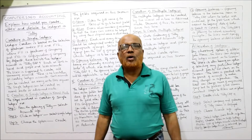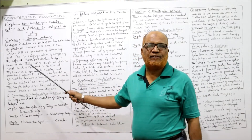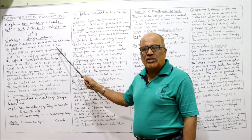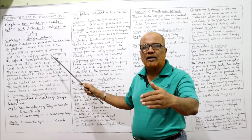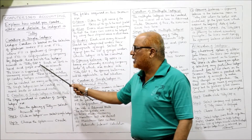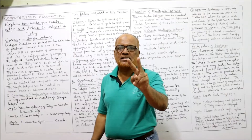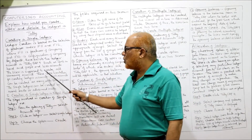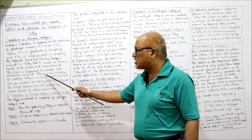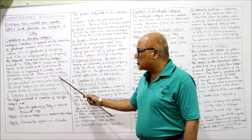How to create a ledger account depends on the selection of features of the company and configuration of company given in F11 and F12. F11 is the features of the company and F12 is the configuration of the company. By default, there exist two ledger accounts in ERP 9: cash in hand and profit and loss account. The user is supposed to create all remaining accounts — there is no limitation on creating ledger accounts.